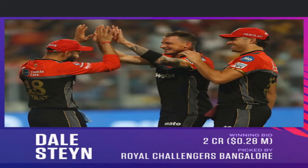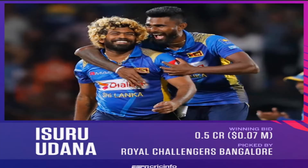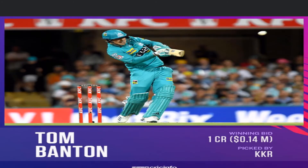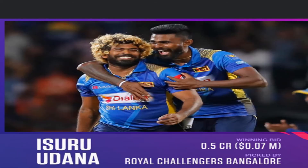April 30 — Sunrisers Hyderabad vs Chennai Super Kings at Hyderabad. May 1 — Mumbai Indians vs Delhi Capitals at Mumbai. May 2 — Kolkata Knight Riders vs Rajasthan Royals at Kolkata. May 3 — Royal Challengers Bangalore vs Kings XI Punjab at Bangalore. May 4 — Rajasthan Royals vs Chennai Super Kings at Jaipur or Guwahati. May 5 — Sunrisers Hyderabad vs Royal Challengers Bangalore at Hyderabad. May 6 — Delhi Capitals vs Mumbai Indians at Delhi. May 7 — Chennai Super Kings vs Kolkata Knight Riders at Chennai. May 8 — Kings XI Punjab vs Rajasthan Royals at Mohali. May 9 — Mumbai Indians vs Sunrisers Hyderabad at Mumbai.